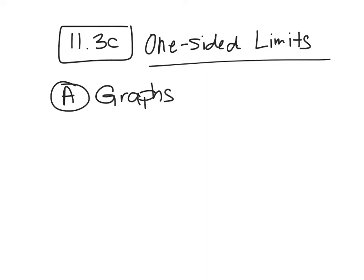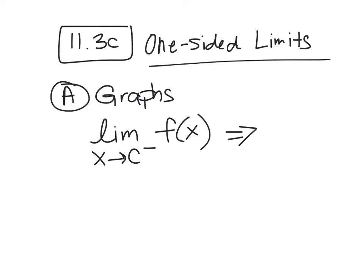So here's what it looks like. You're taking the limit as x goes to c, and they put a little minus up here — c minus. So the limit as x goes to c minus of f of x. What this is, is the limit from the left side of c only.